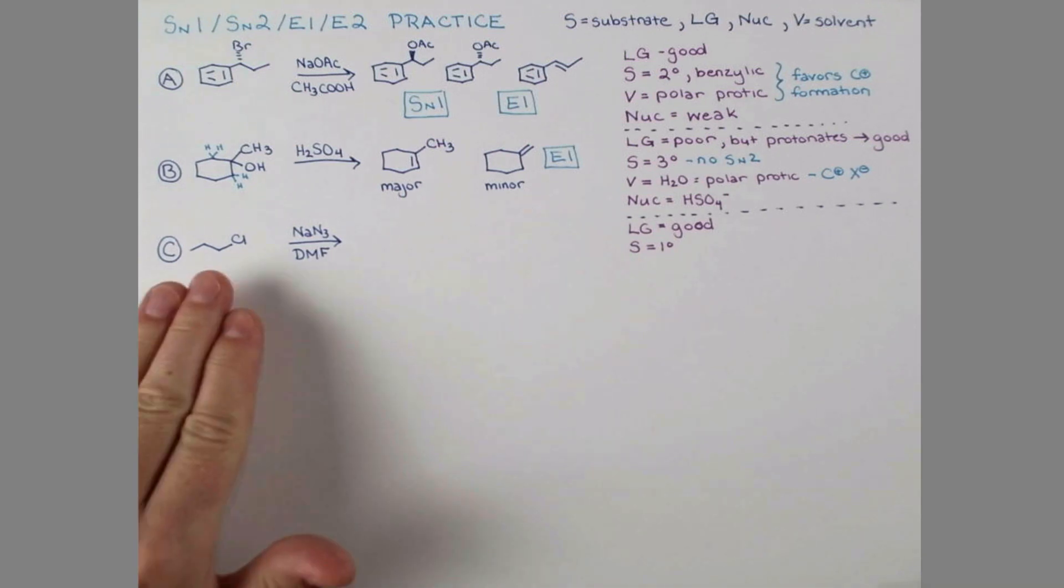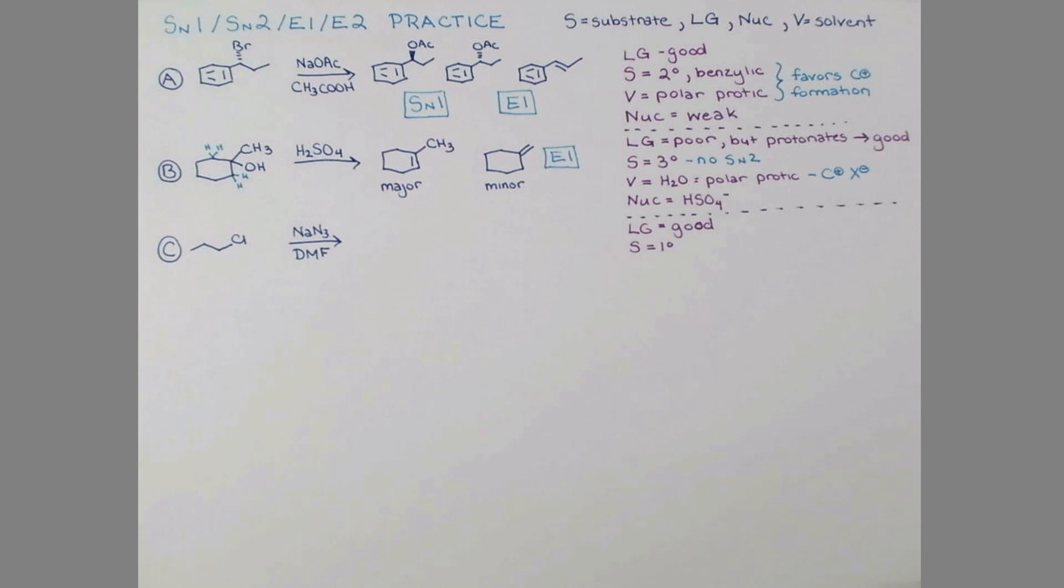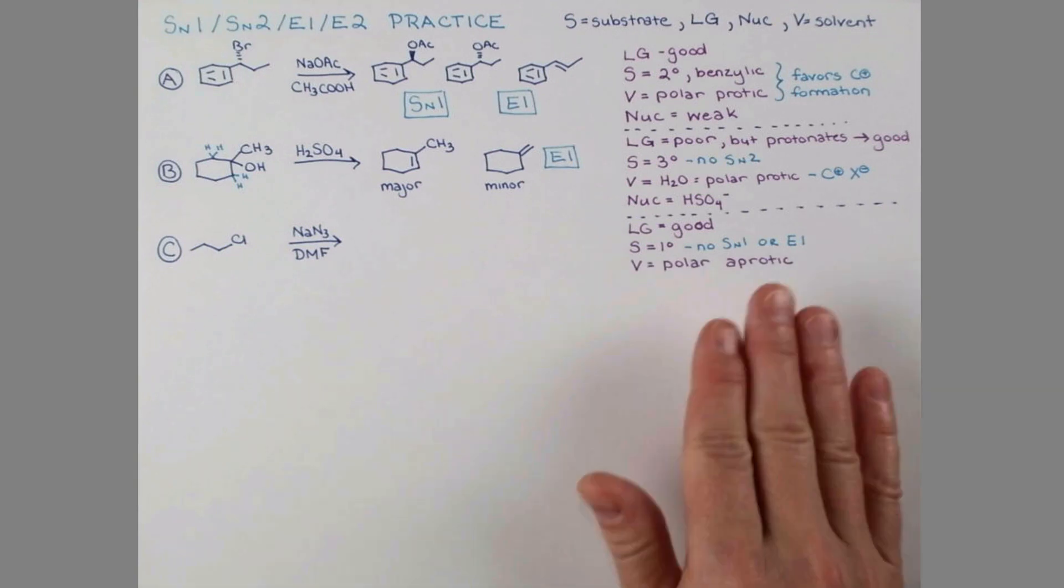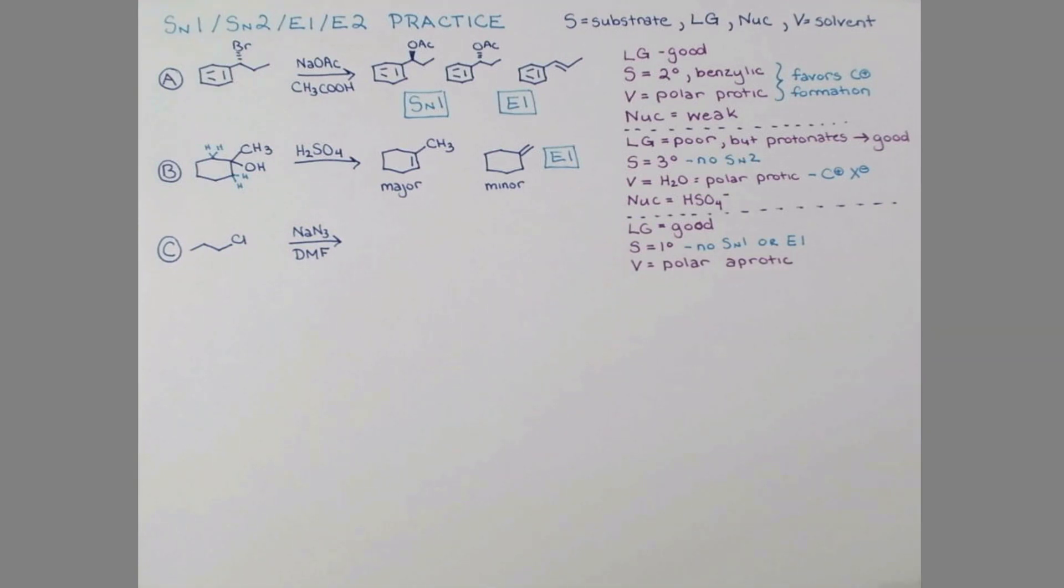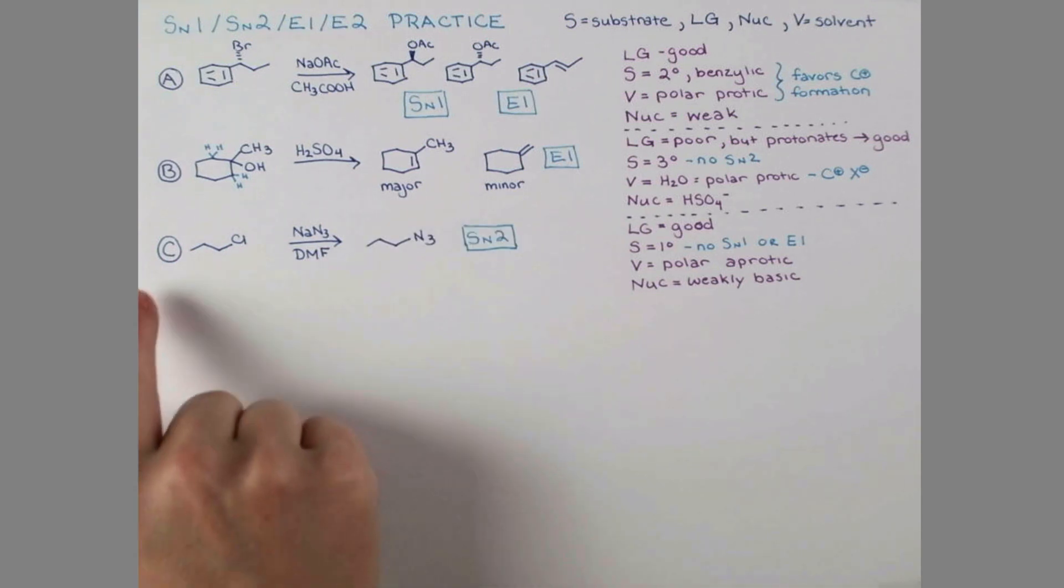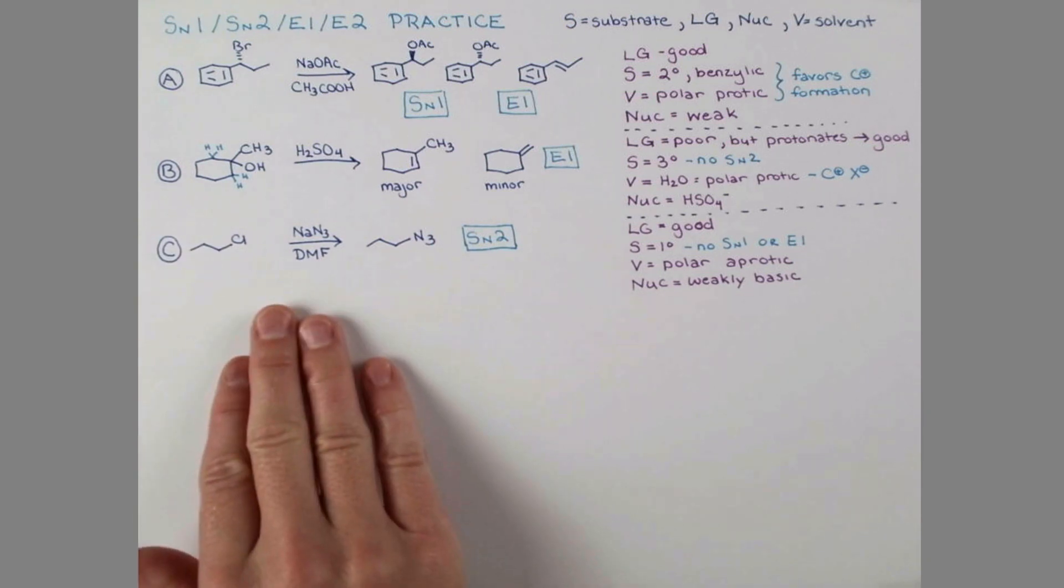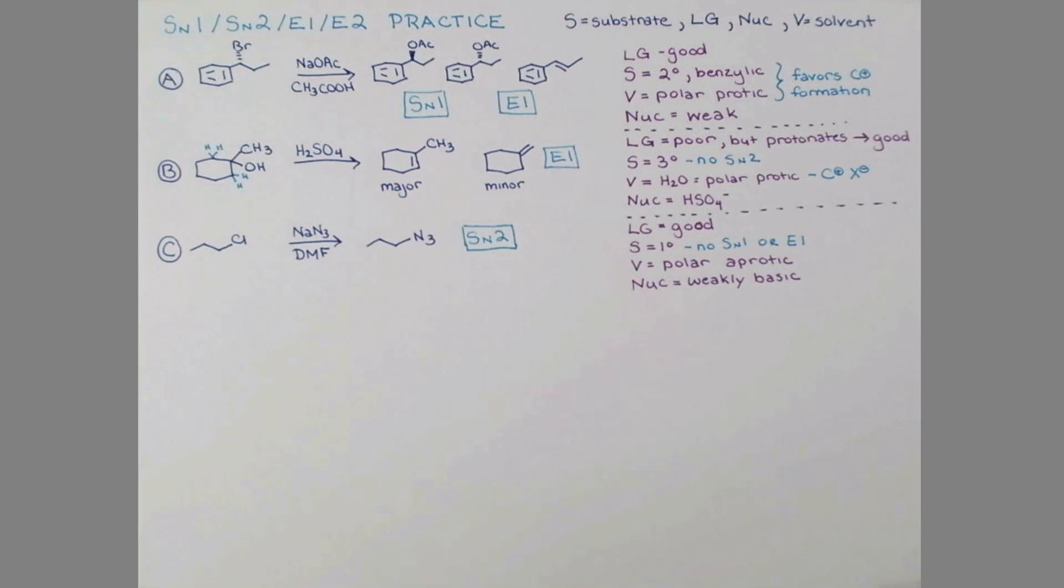This results from deprotonation either here or here. We can get a minor amount of an elimination product resulting from deprotonation here. Our mechanism was E1. Let's try another problem. For problem C, we're treating this chloride with sodium azide in DMF. We have a halogen and it's not fluorine - we have a good leaving group. The chlorine is at the end of the molecule hanging off of this carbon here. This is a primary halide.